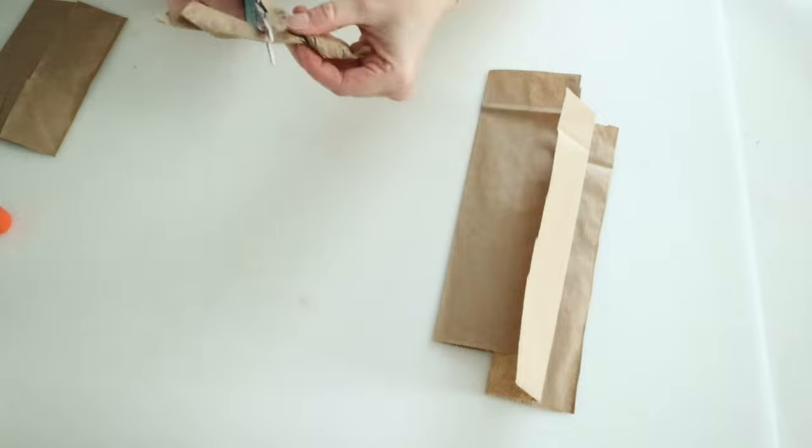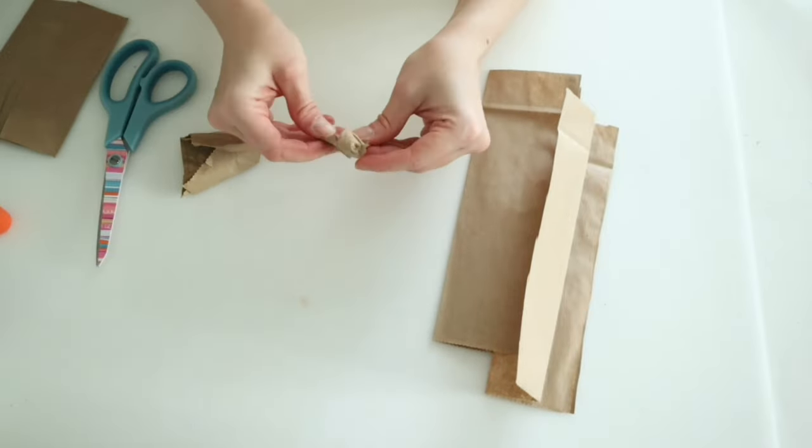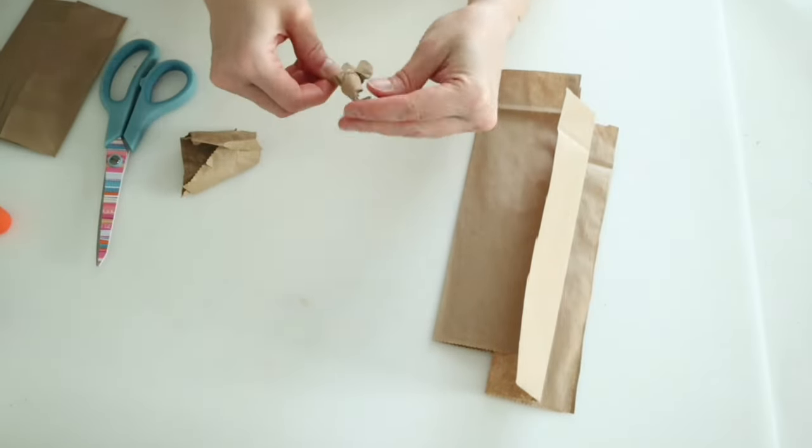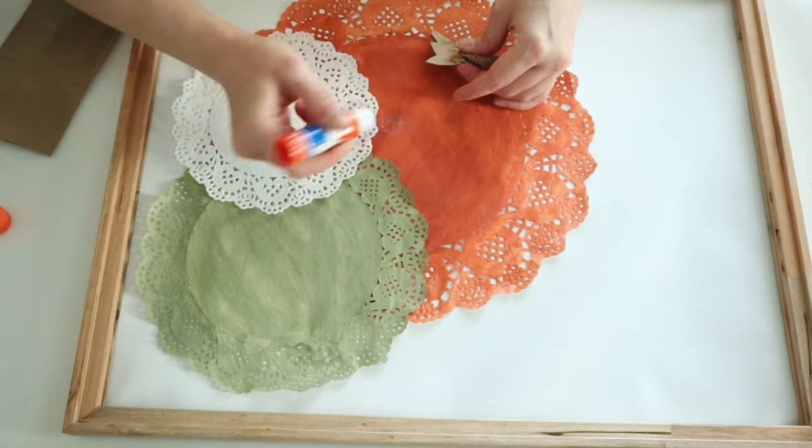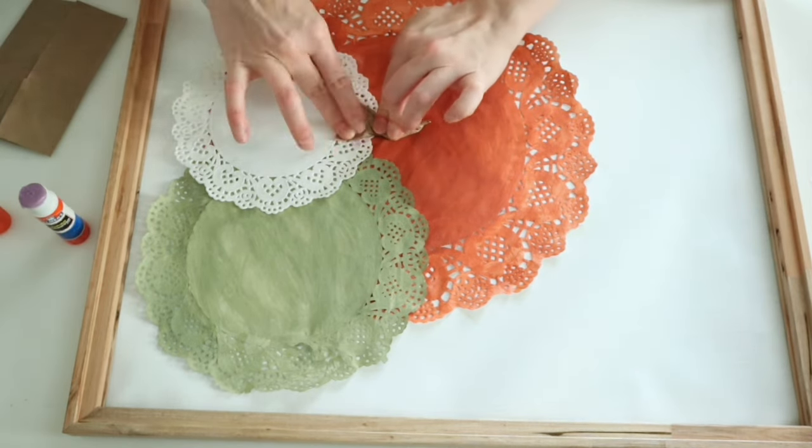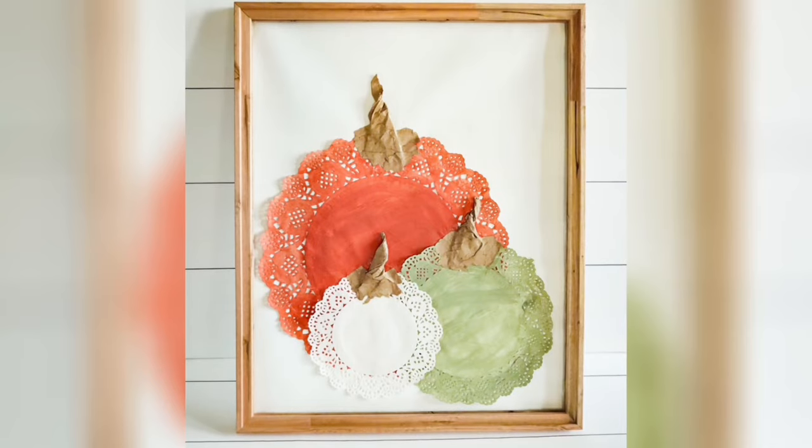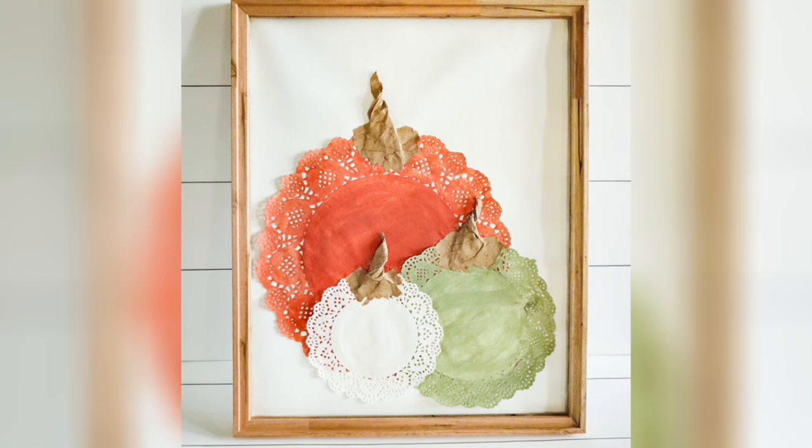Cut them down and then I also just added a couple pieces of the paper bag with some Mod Podge to cover up that bottom part. And I just used the glue stick to attach the stems to the pumpkins and here's how it turned out.